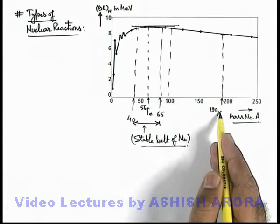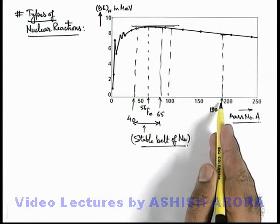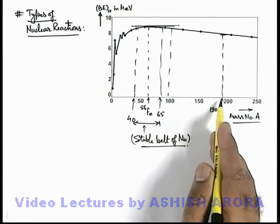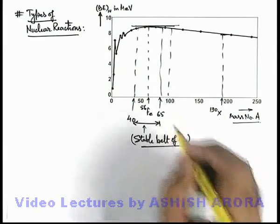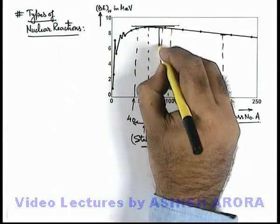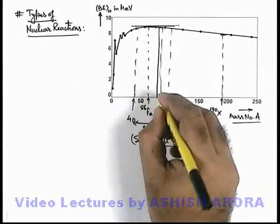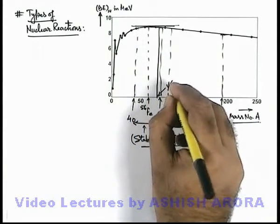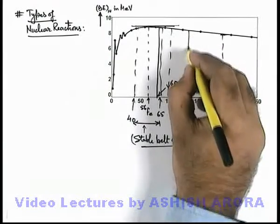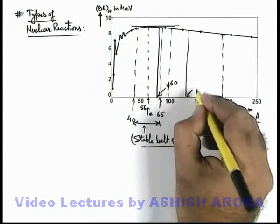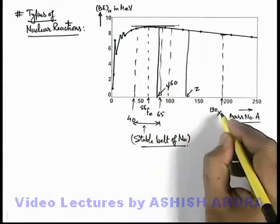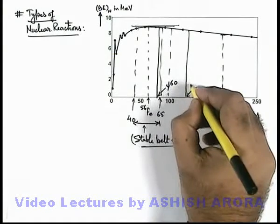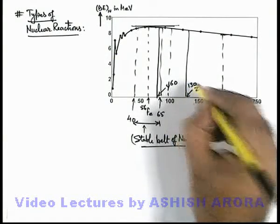So if this nuclei X splits into two or more nuclei which are relatively lower weight, say two elements are obtained, one is in this range which is Y60, and the other is somewhere here which is Z. And as X was having mass number 190, Z must be having mass number 130.